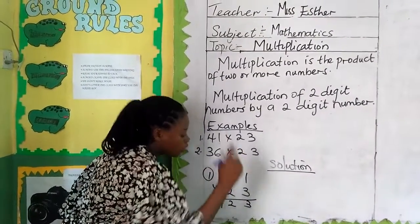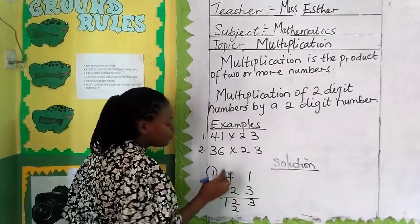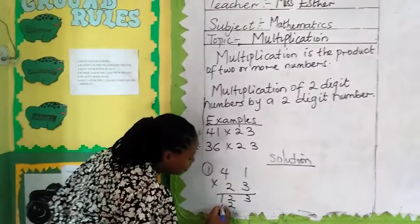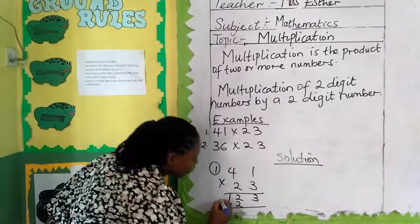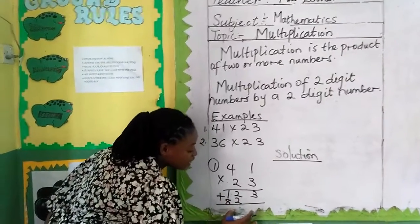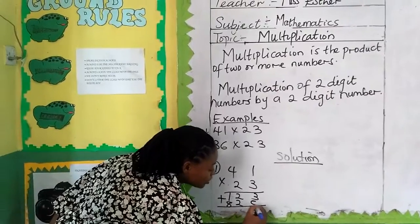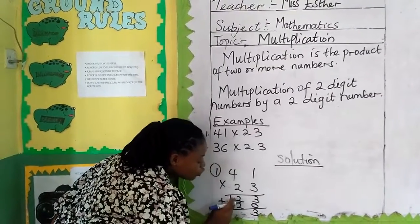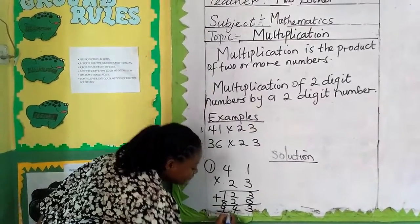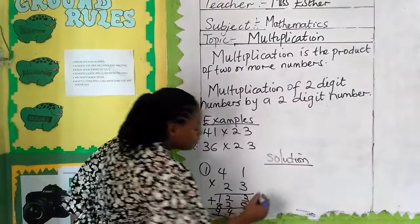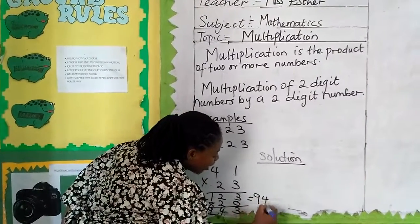2 multiplied by 1 gives us 2. We put the 2 under the 2. 2 multiplied by 4 gives us 8. Then we do our addition. 3 plus 0 gives us 3. 2 plus 2 gives us 4. 1 plus 8 gives us 9. So 41 multiplied by 23 gives us 943.